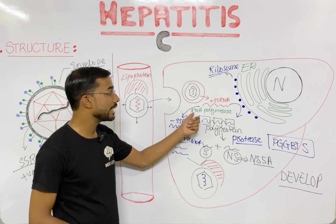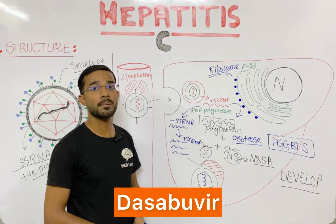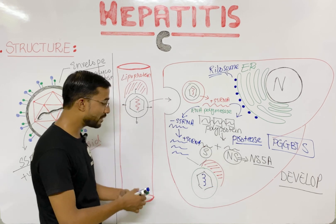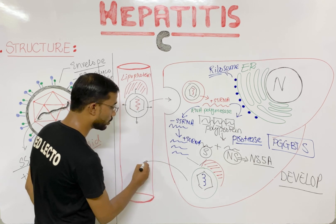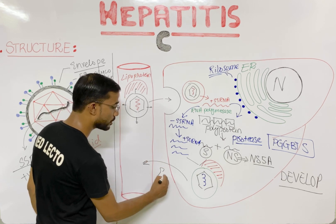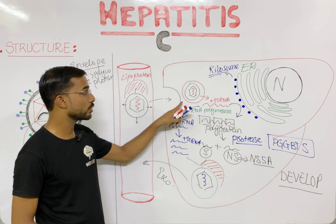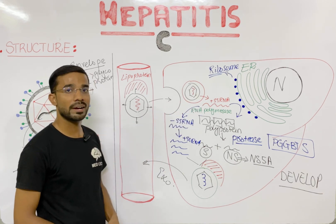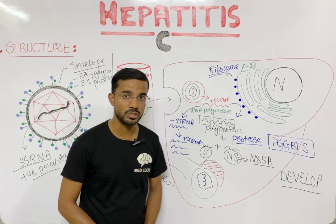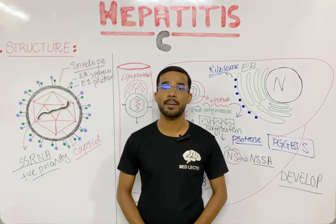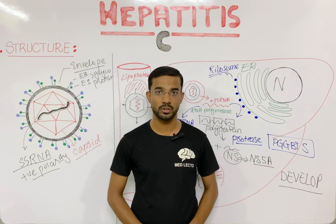There are also drugs that block the RNA polymerase, most importantly Sofosbuvir and Dasabuvir. After assembly, the complete lipo-viral particle exits the hepatocyte through exocytosis and enters the bloodstream. This completes the replication cycle of the hepatitis C virus. If you have any questions, please ask in the comment section — thank you.